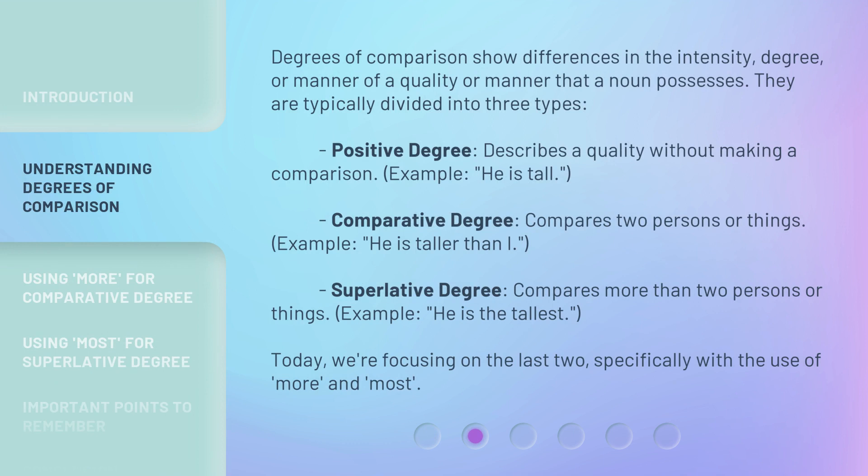Degrees of comparison show differences in the intensity, degree, or manner of a quality that a noun possesses. They are typically divided into three types. Positive degree describes a quality without making a comparison — for example, 'he is tall.' Comparative degree compares two persons or things — for example, 'he is taller than I.' Superlative degree compares more than two persons or things — for example, 'he is the tallest.' Today, we're focusing on the last two, specifically with the use of more and most.